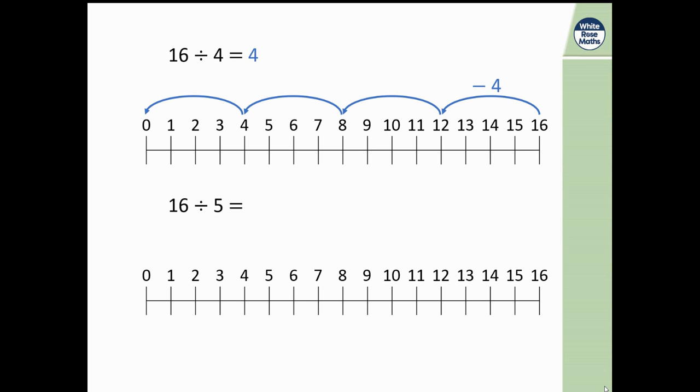Let's have a look here now. 16 divided by 5. I'm going to go back in steps of 5, aren't I? So from 16 to 11, that's a step of 5 and you can see that I've made 3 steps of 5. So 16 divided by 5 is equal to 3, but I haven't quite made it to 0, have I? So it's going to be 3 remainder 1.